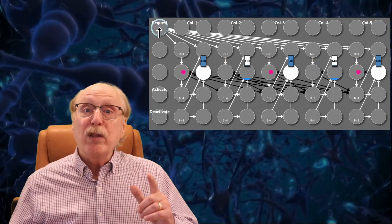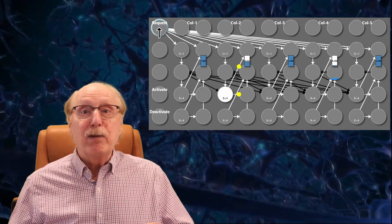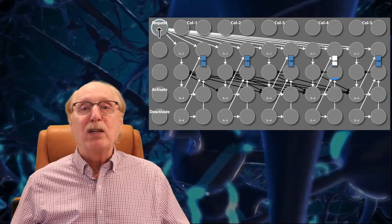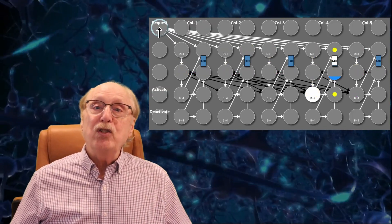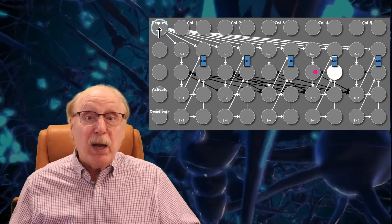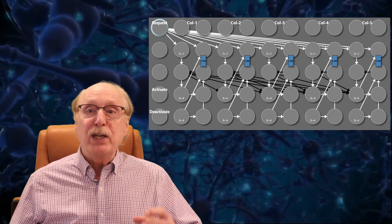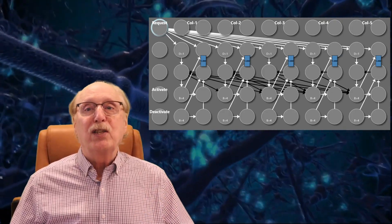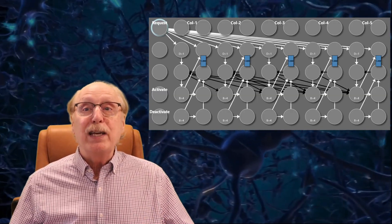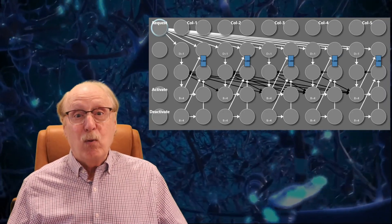That way, only the first available column is activated, even if several are technically free. It's fast, efficient, and biologically plausible. Once a column is chosen, its activate neuron fires a burst — again, four spikes. This burst marks the column as in-use, and also potentially triggers other processes to prepare that column for learning. In future videos, I'll show how this activation burst connects to the learning circuitry, and how the column actually acquires meaning.